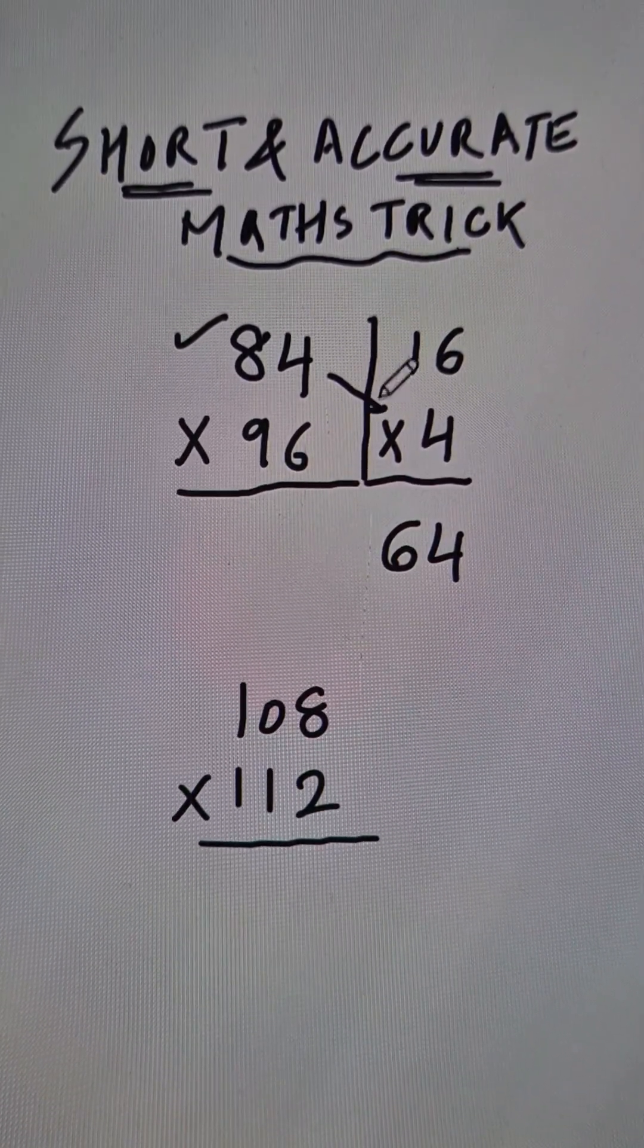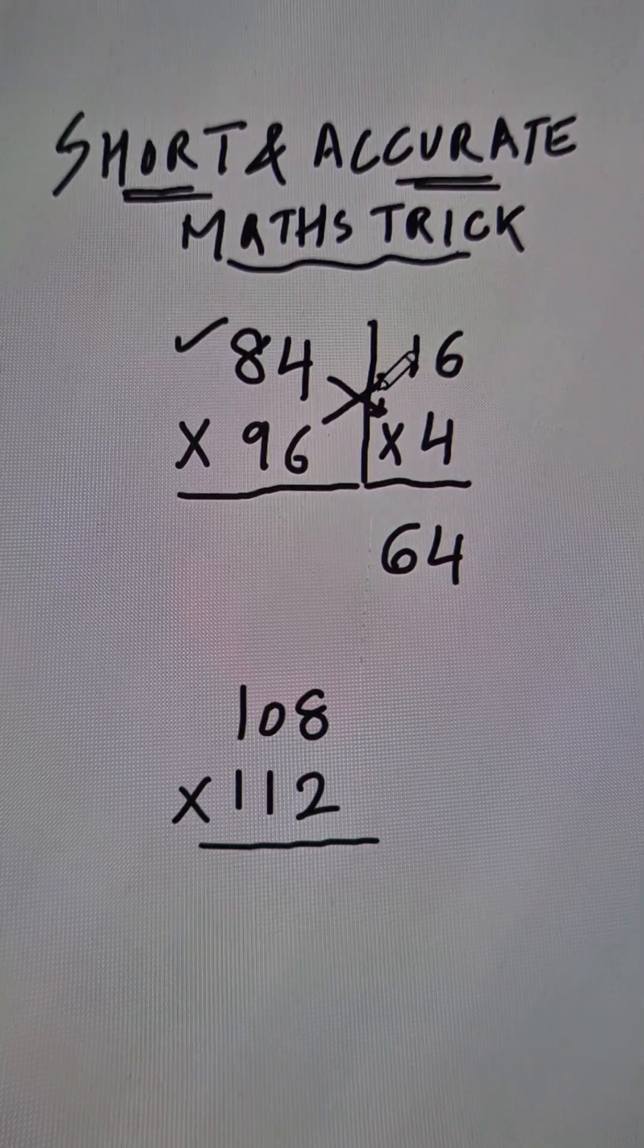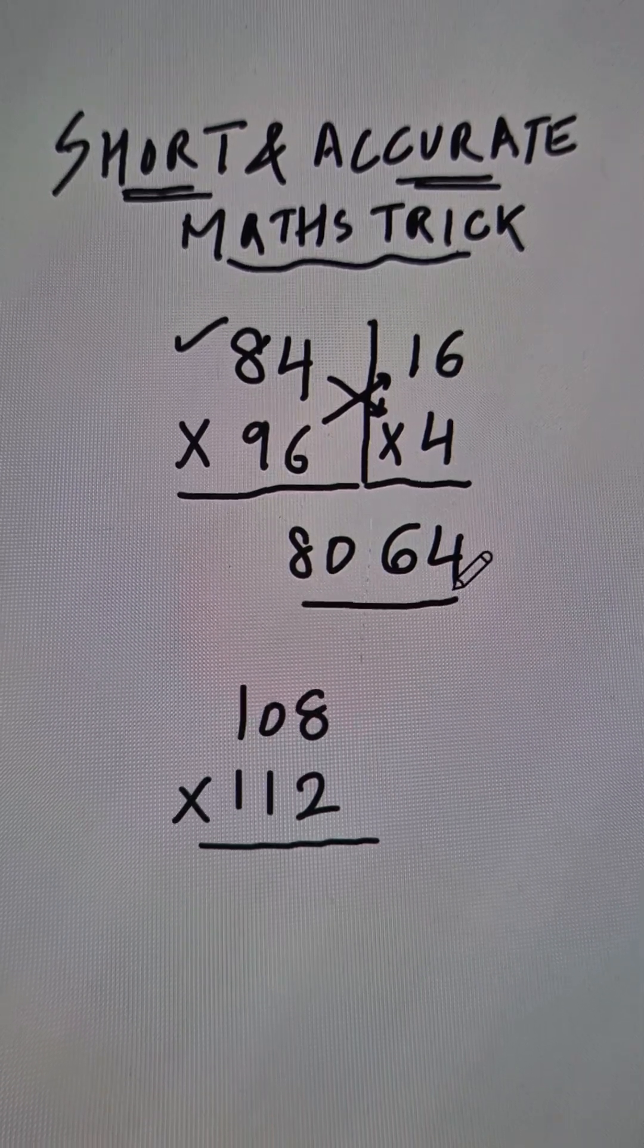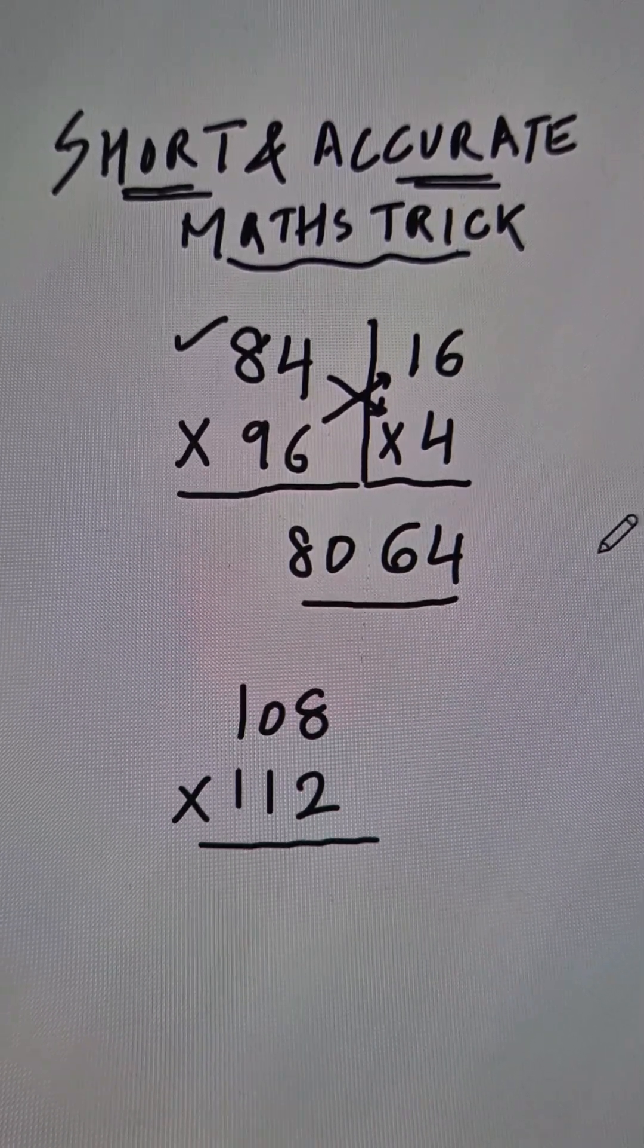Now either subtract like this: 84 minus 4 is 80, or subtract like this: 96 minus 16 is 80. And now pick up the calculators and check your answer. 84 times 96 will be 8064.